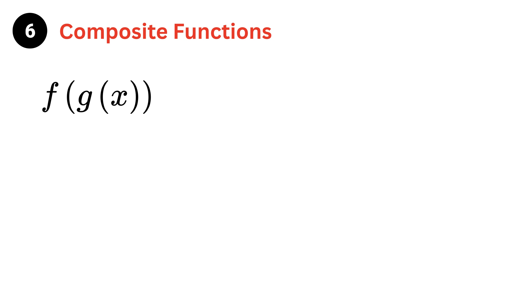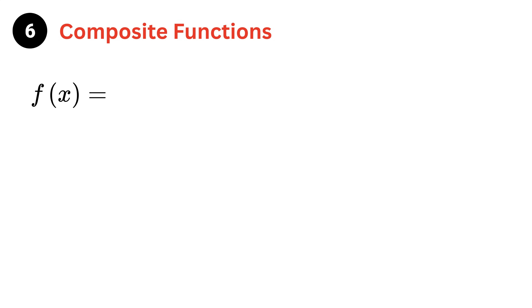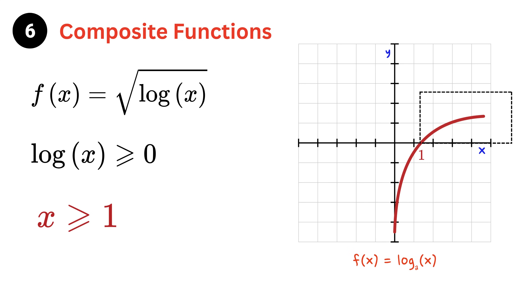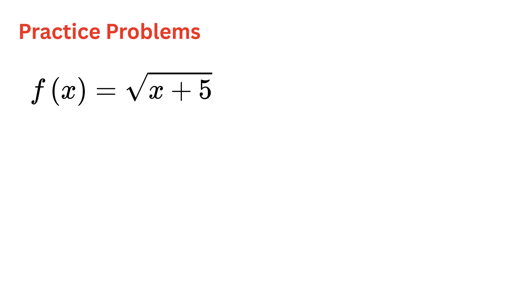Finally, this is not a constraint but something to be careful about: sometimes you get functions inside other functions, called composite functions. For example, f(x) = square root of log(x). You must obey both the log rule and the square root rule. The log(x) must be > 0, which means x > 1, because log of 1 is zero and log values become positive only when the input exceeds 1. So the domain is x from 1 to infinity.